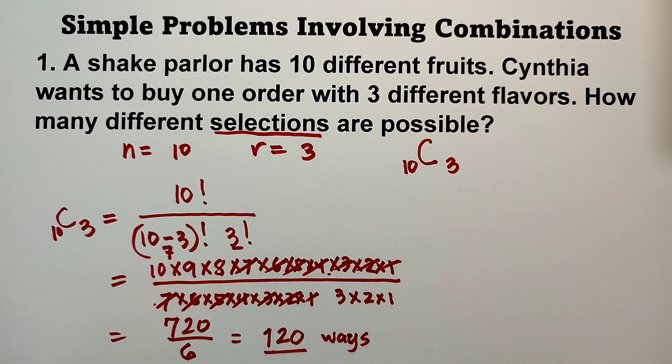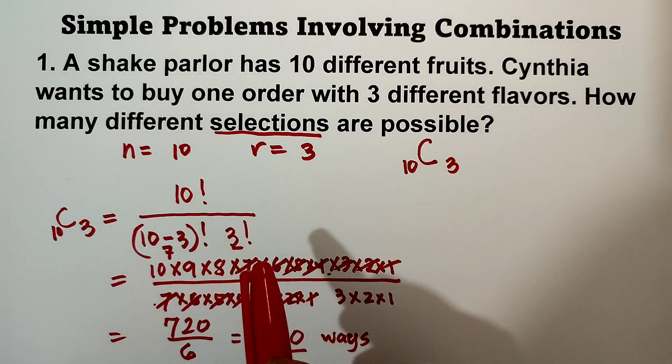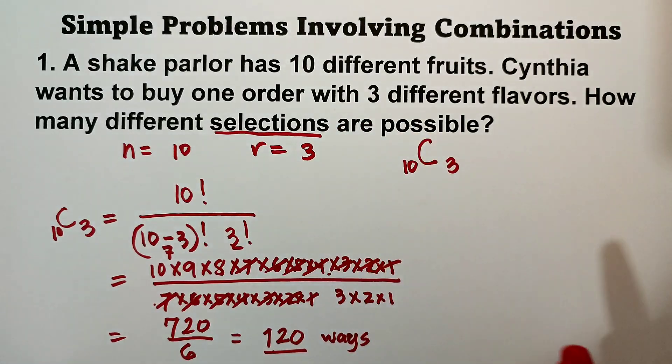So we have 120 ways. There are 120 possible ways of selecting 3 different flavors from 10 different fruits.